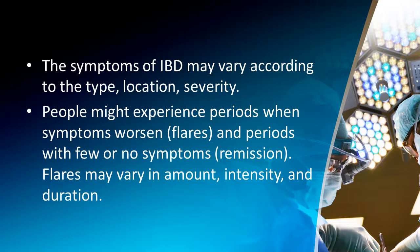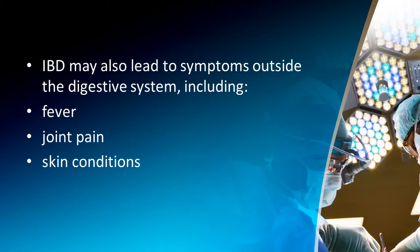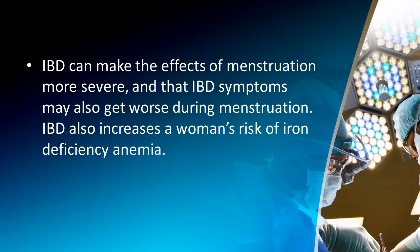Flares may vary in amount, intensity, and duration. According to the CDC, common symptoms for both main types of IBD include blood in the stool, persistent diarrhea, fatigue, and weight loss. IBD may also lead to symptoms outside the digestive system including fever, joint pain, and skin conditions. IBD can make the effects of menstruation more severe, and symptoms may worsen during menstruation. IBD also increases a woman's risk of iron deficiency anemia.